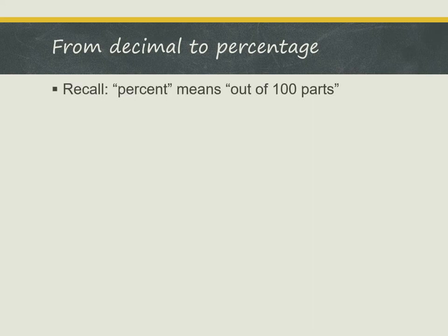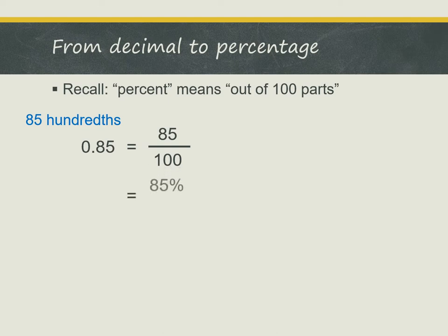Recall that percent means out of 100 parts. So if we have the decimal 0.85, we can express it as 85 hundredths, and 85 hundredths, when we write it as a fraction, we get 85 out of 100. This can be written as the percentage 85%.